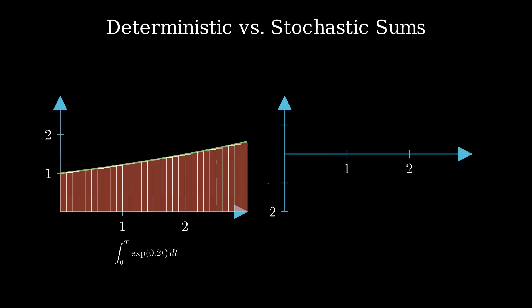Itô summing is wild, like tracking a stock's roller coaster. The integral from zero to t of W(t) with respect to W(t) jumps all over.